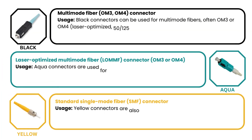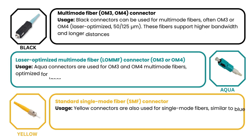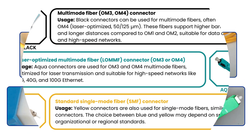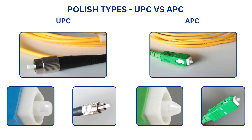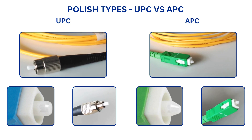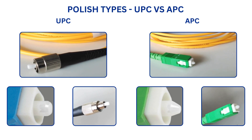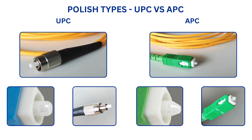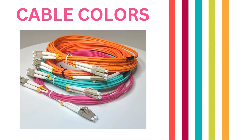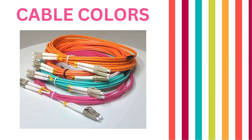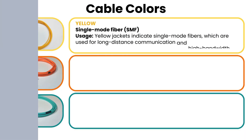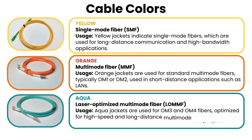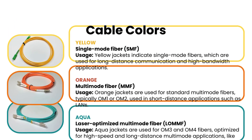Here's an overview of what different colors typically mean in fiber-optic connectors. There are also different polish types in connectors: UPC and APC. Cables come in different colors, and here's an overview of what different colors typically mean in fiber cables.